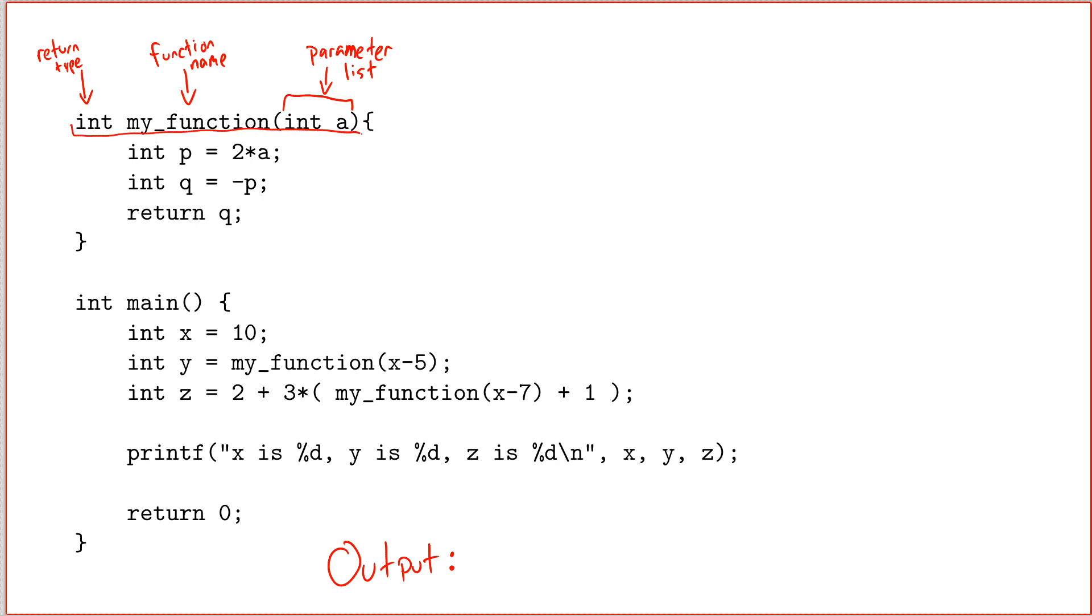So altogether, this first line here is the function signature. And it's supposed to provide everything from a programming standpoint that is needed to use the function. It might not provide enough information to programmers about what the function is meant to do, but it should provide enough information, for example, to the compiler, that when you use the function, it understands what the function means.